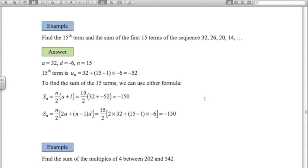Find the 15th term and the sum of the first 15 terms of this sequence. So I write down what's a: 32. What's d? You can see the common difference here, we're going down by 6 each time, so d is negative 6. We're talking about the 15th term, so n is 15. Substitute those numbers into the first formula. The 15th term is negative 52.